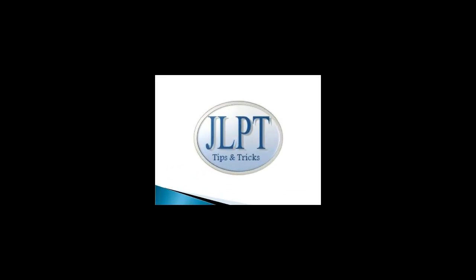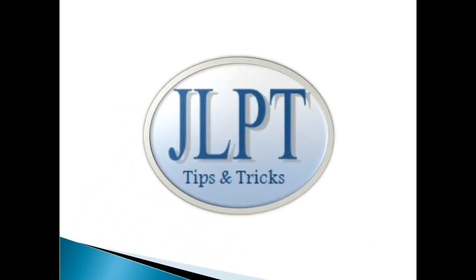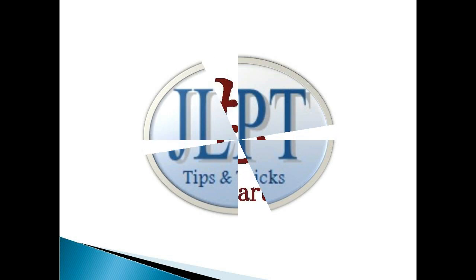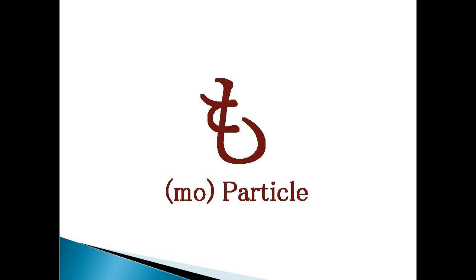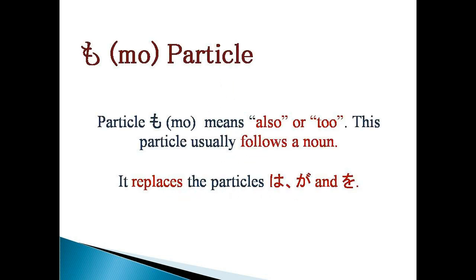Hello Friends! Welcome to JLPT Tips & Tricks once again. Our today's topic is Particle MO. Particle MO means 'also' or 'too' in English. This particle usually follows a noun. MO particle replaces particles WA, GA, and O in Japanese sentences.